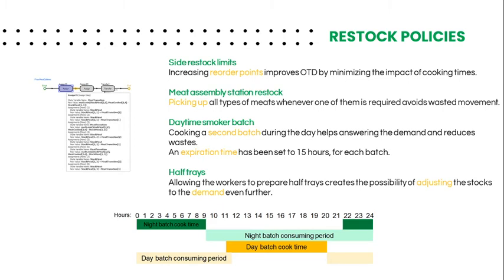To complement this strategy, the amount cooked at nighttime will vary according to what's left from the previous batch. The expiration time has been set to 15 hours for each batch, according to the current daily duration of the meat batch.